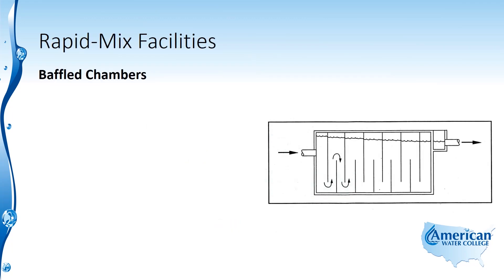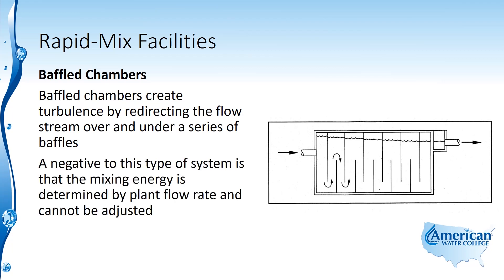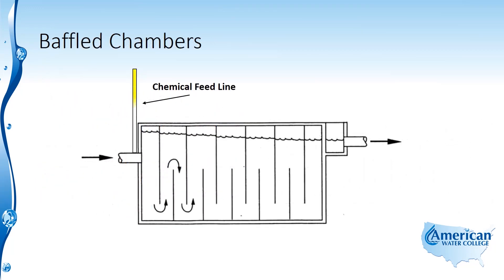Baffled chambers are a simple design that creates turbulence by redirecting the flow stream over and under a series of baffles. A negative is that the mixing energy is determined by plant flow rate and cannot be adjusted. Water comes in, the chemical feed is added, and it passes through a series of baffles where it is redirected, causing turbulence and mixing. These are the different rapid mix or flash mix facilities used in water treatment.